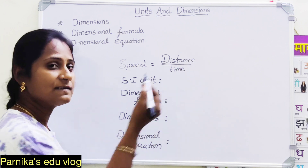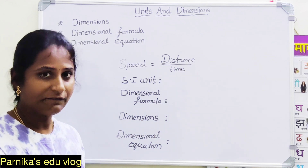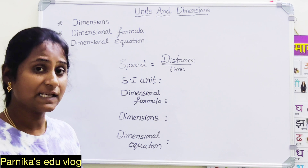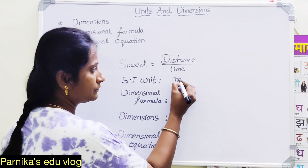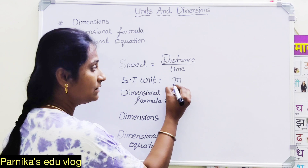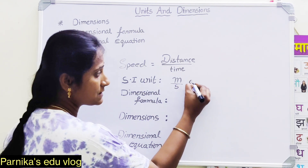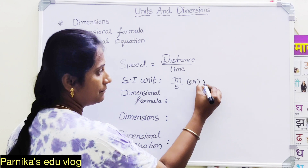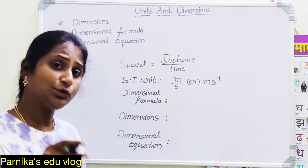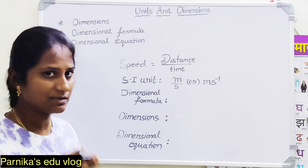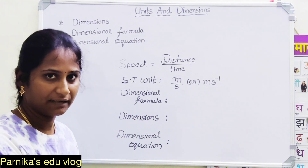Distance is nothing but length. Length is a fundamental physical quantity, and the SI unit for length is meter. So the SI unit of speed is meter per second, which can also be written as m·s⁻¹. Both are the same — just two ways of writing it. This is the SI unit of speed.